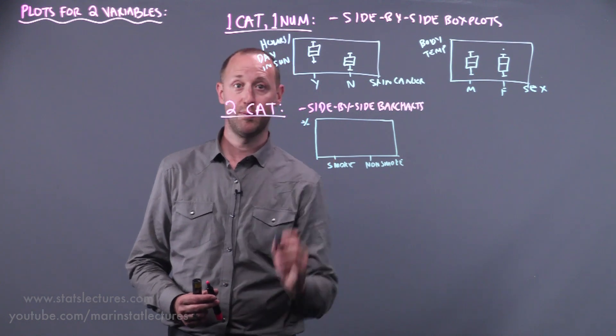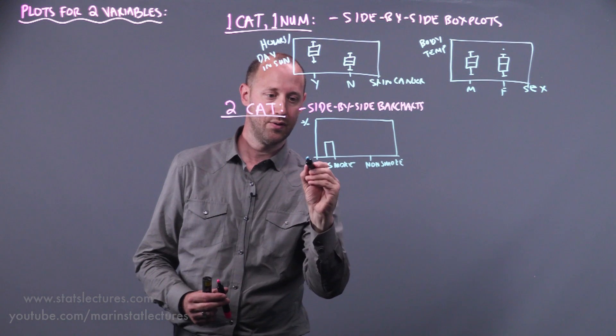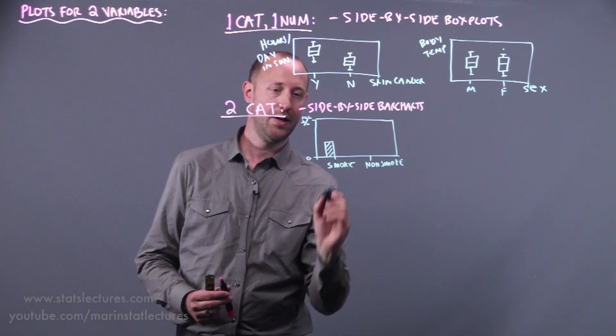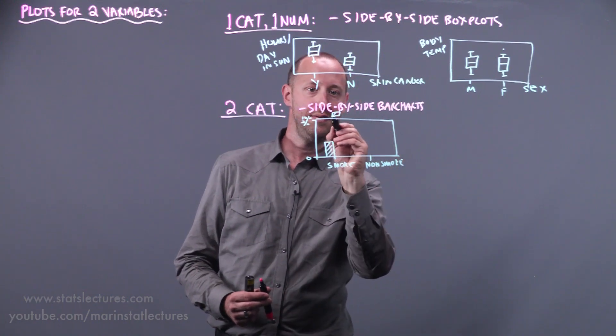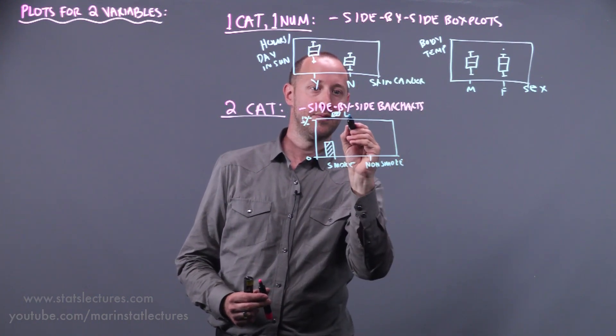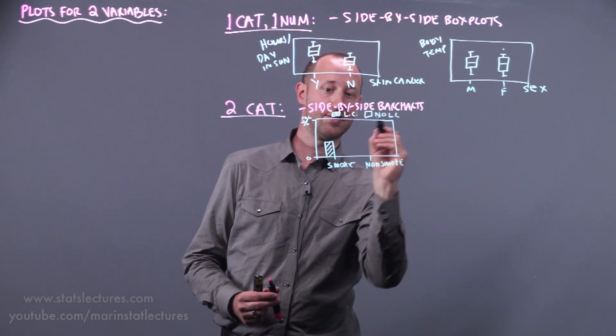So on this axis we'll put the percentage, and what we'd like to see is something like this, going from zero up to 100%. And here I'm drawing it, so well, let me label these. We'll do this dash here as those who have lung cancer, and we'll do it with no dashes for the group with no lung cancer.